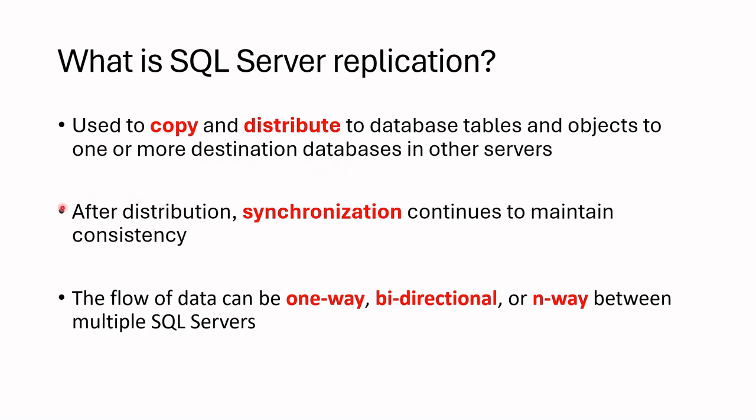After the distributing process, synchronization can be set in a way your source and destination data are always consistent. The flow of replication can be one-way, bidirectional, or n-way. I will explain how this replication mechanism works step by step.